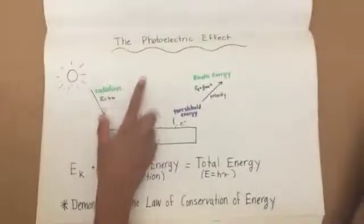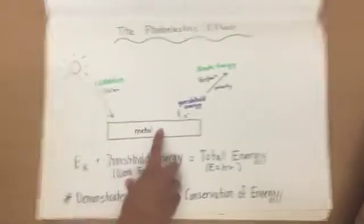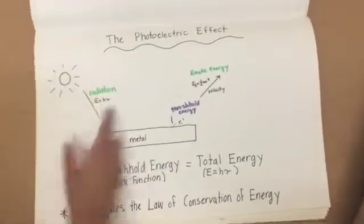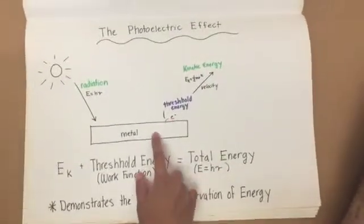When dealing with the photoelectric effect, you'll be given a light source that's shining a radiation onto a metal. When the energy of this radiation reaches a certain threshold, you'll have enough energy to emit an electron from the surface of the metal.